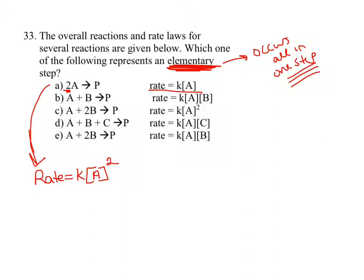Looking at this example — which one of the following represents an elementary reaction — if the rate law doesn't match what stoichiometry predicts, it's not an elementary step; it's probably a multi-step reaction. Going down the list, B is the correct answer. The rate law for B is rate equals k times [A]^1 times [B]^1, because both coefficients are 1. That represents an elementary step.